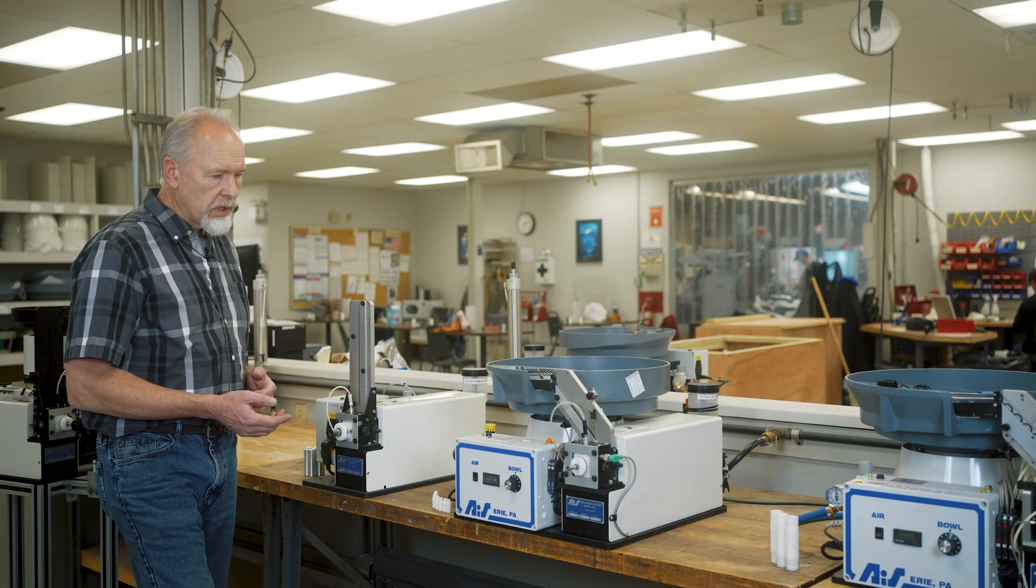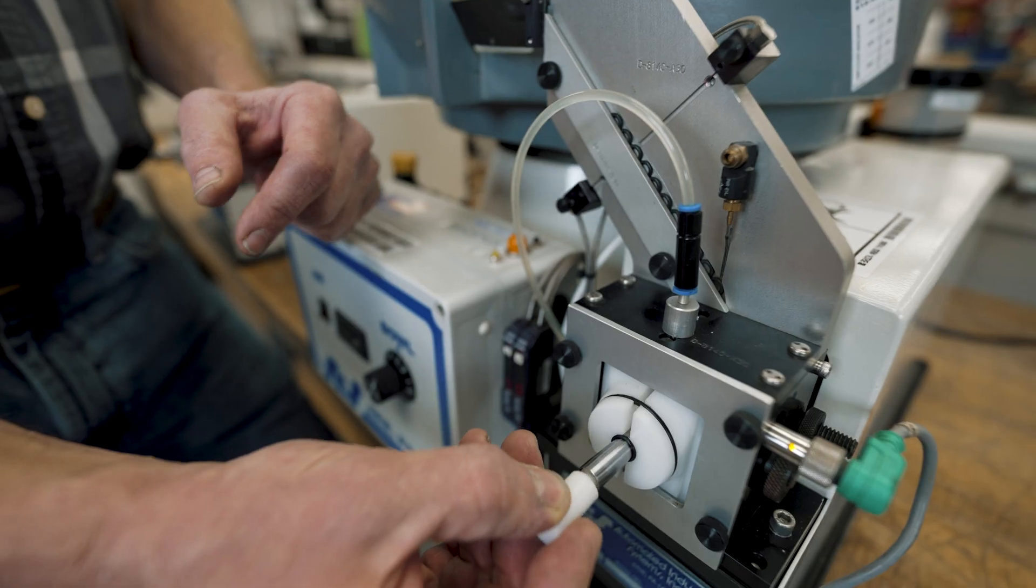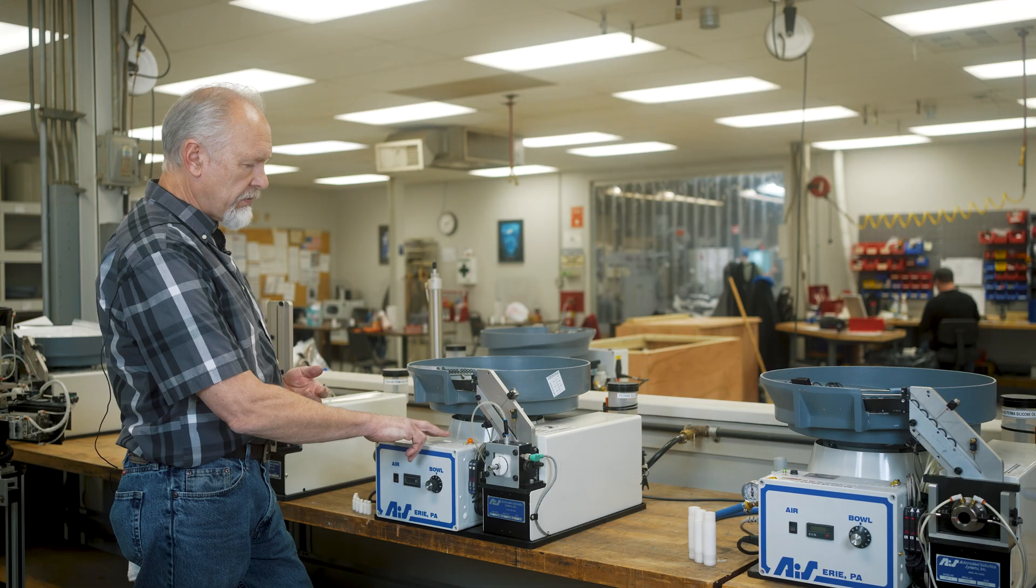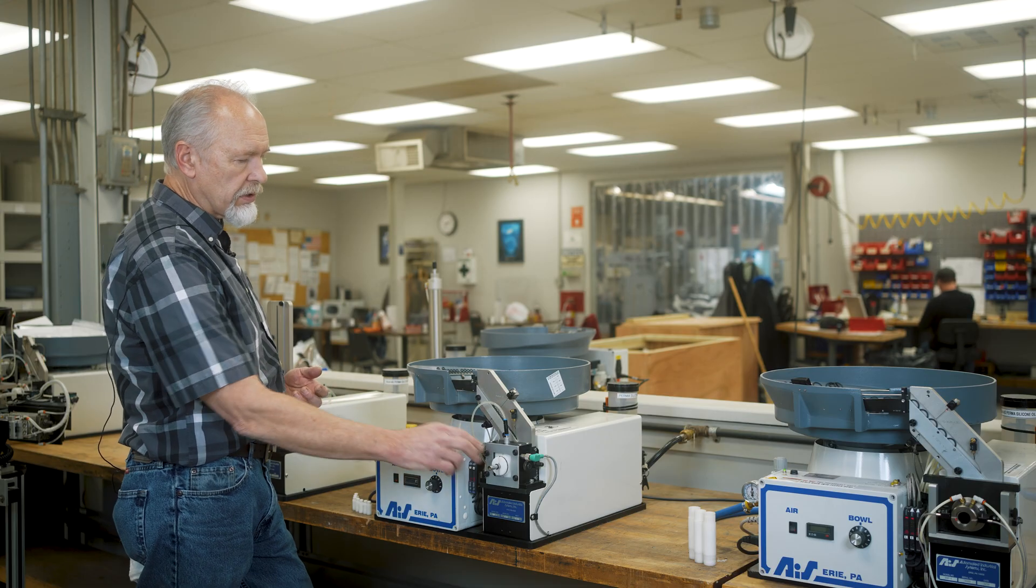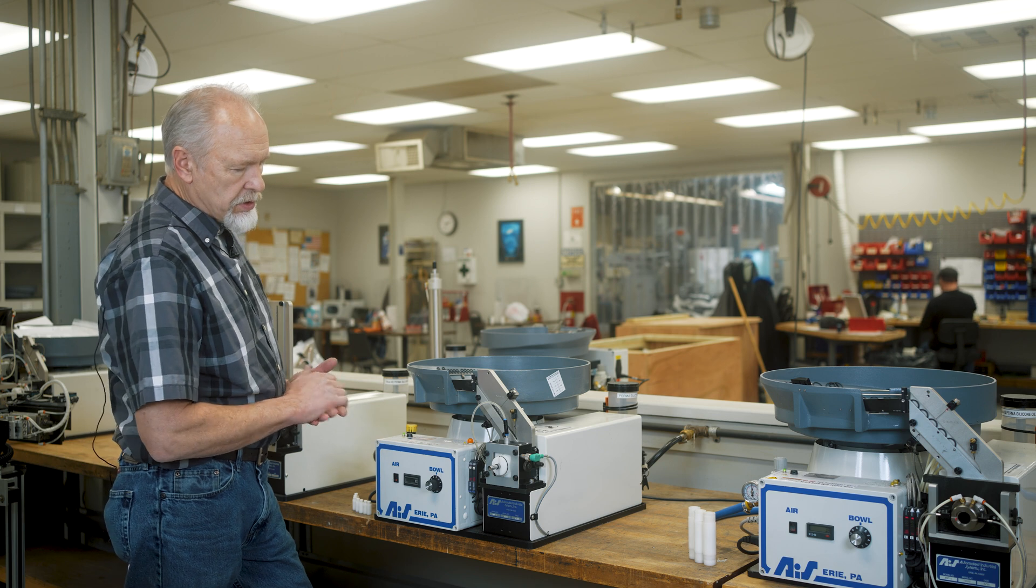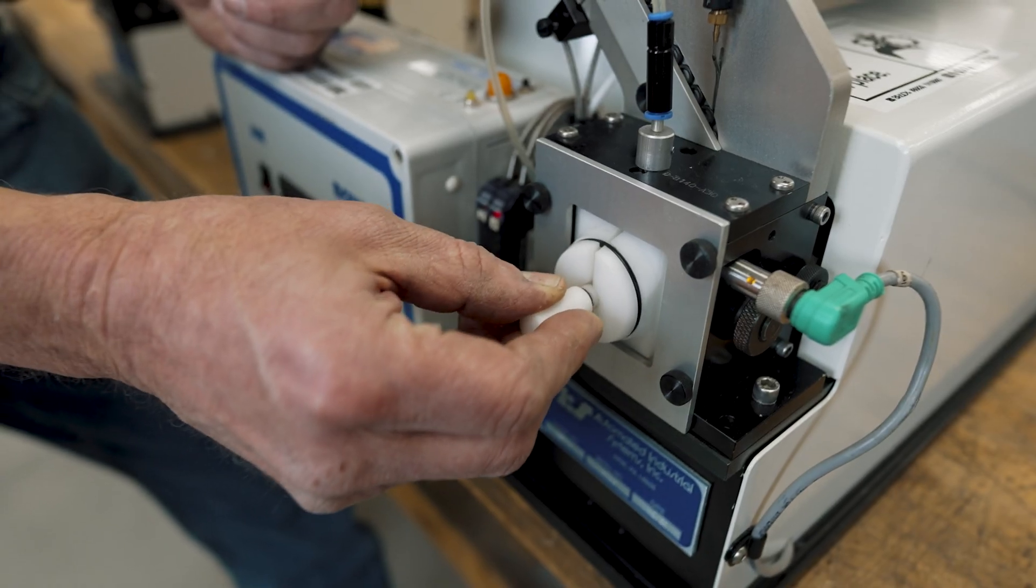Now, this next machine is an ASP-1. This is a base for a lot of our customers. This one happens to have something called the missed O-ring indicator option on it and it just monitors when the O-ring comes out on the mandrel.